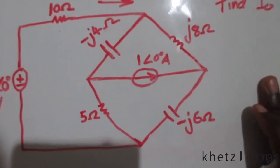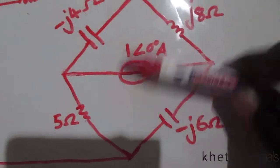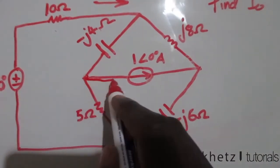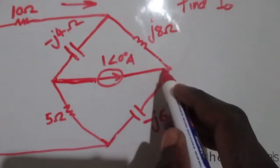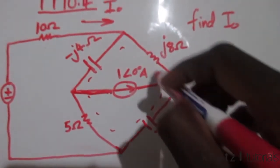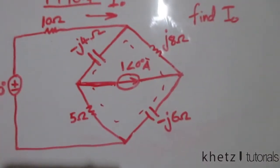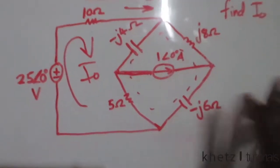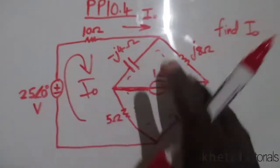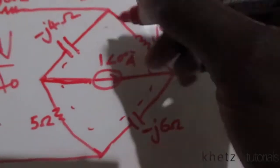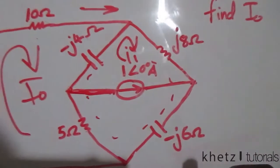The first thing to notice is that we have a current source in between two meshes with nothing else along that path. This qualifies as a supermesh. We have IO flowing, and the first step is to label the two meshes that form the supermesh — I'll call the top one I1 and the bottom one I2.